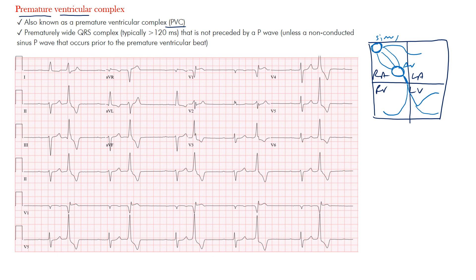When we have ventricular complexes, imagine a normal beat followed by a beat that occurs earlier — originating in the ventricles, as the name implies. A premature atrial complex is an early beat from the atrium; a premature ventricular complex originates somewhere in the ventricles. Because it's outside the conduction system, you don't have the gap junctions that expedite the impulse. Instead, you get slow cell-to-cell depolarization, resulting in wide QRS complexes.